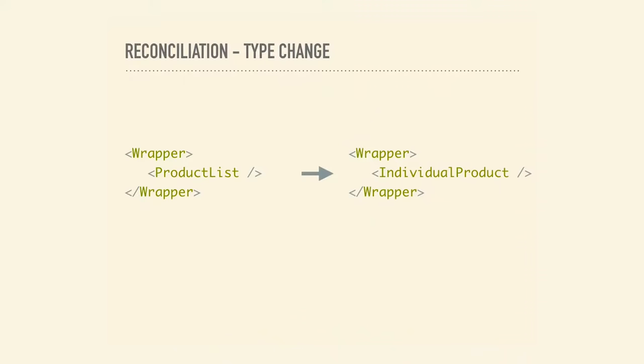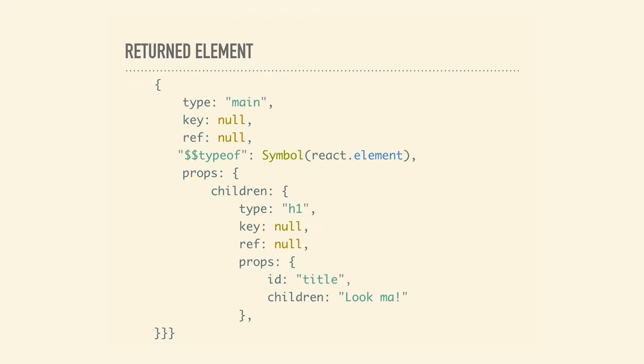Let's look at some examples. Say we have two components — the user is viewing a list of products, then taps on one to see an individual product. We have our tree: wrapper, then product list. Whenever the root elements have different types, React tears down the whole tree and builds a whole new tree from scratch. The reason is that the type has changed — if 'main' were to become 'div', everything beneath it gets blown away.